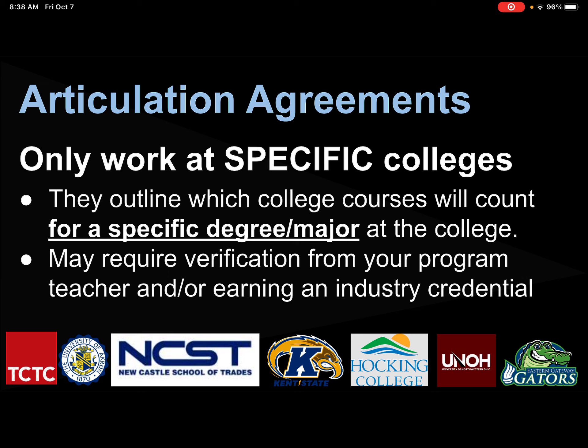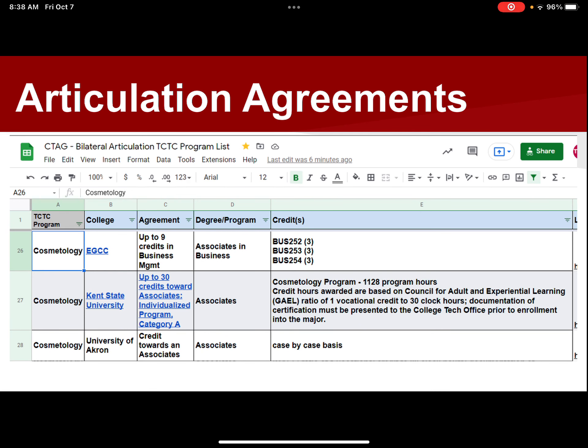Listed below are just some example colleges that we have articulation agreements with. The spreadsheet I showed you earlier also has an articulation agreements tab. On the left-hand side will be your program, then it lists the college we have the agreement with. The agreement column gives a brief description of what the agreement involves — like how many credits you can earn and which degree it is for — and in most cases I have listed the specific college courses you'll receive credit through the articulation agreement.